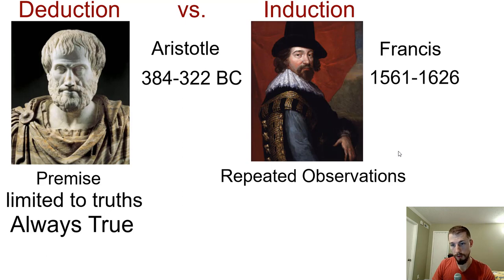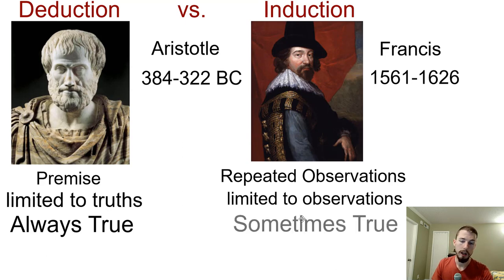But then with the scientific revolution comes around with Sir Francis Bacon and other contemporaries, saying look, we can do this thing called science, which is based on repeated observations. It's limited to things that we can observe. And it's only sometimes true. So unfortunately it's as good as we can do up to that point. But then later on, we end up looking back at our science, we're like, wow, we were dumb, but we're still dumb anyway.